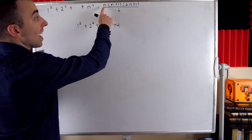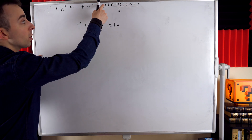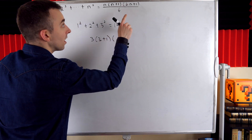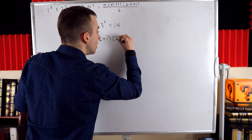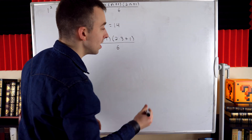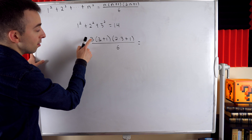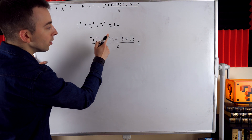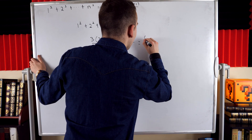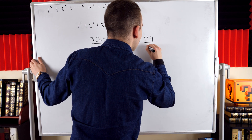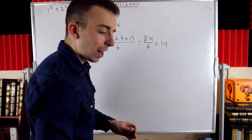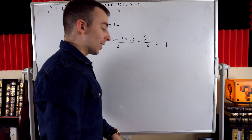The equation tells us that it should also equal 3 times 3 plus 1 times 2 times 3 plus 1, all over 6, since n equals 3. So this should be equal to 14 — is it? Well, 3 times 4 is 12, times 7 is 84, divided by 6 is indeed 14. So we see the equation works for n equals 3.